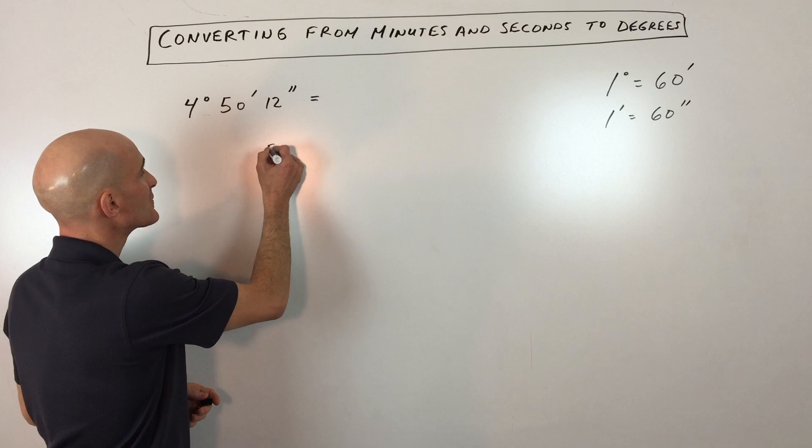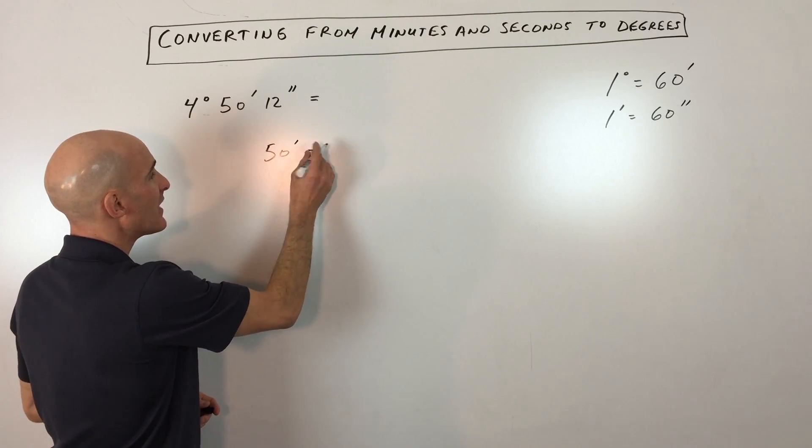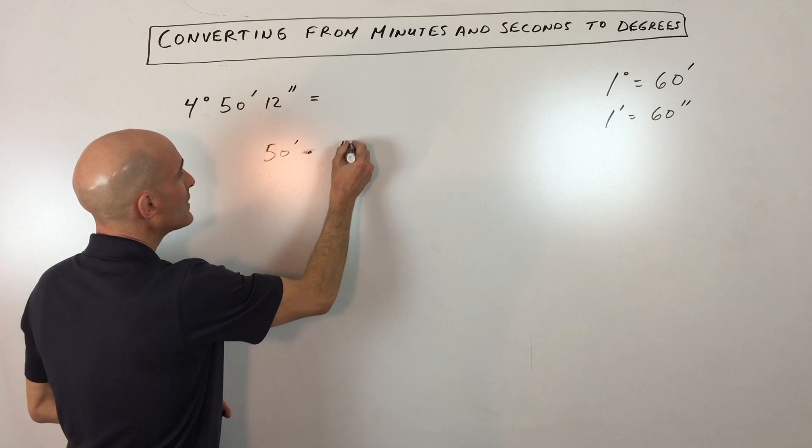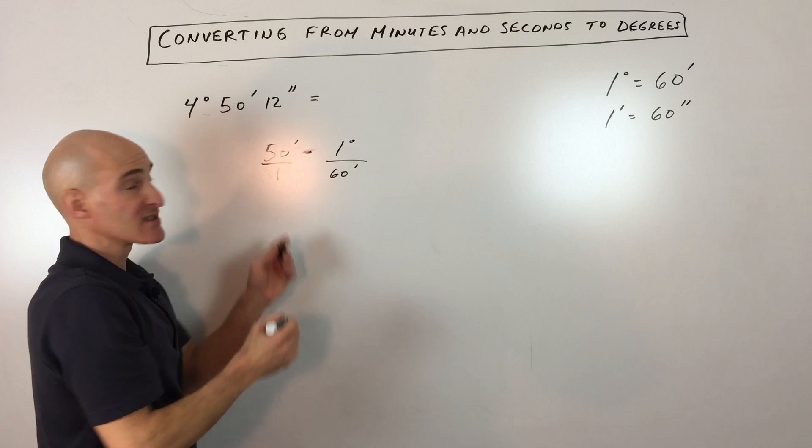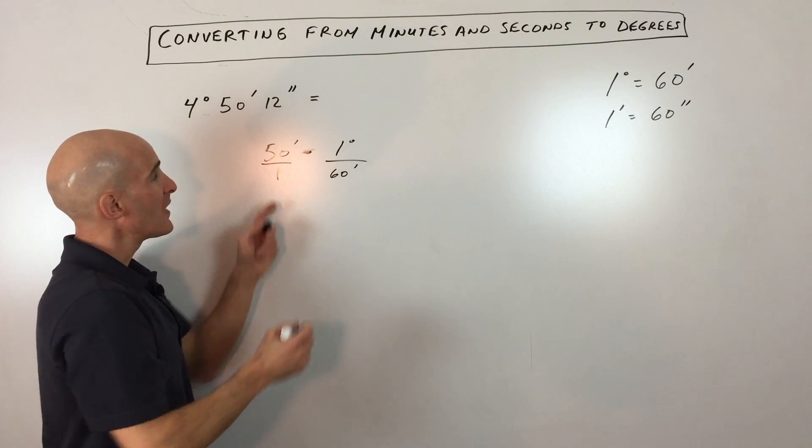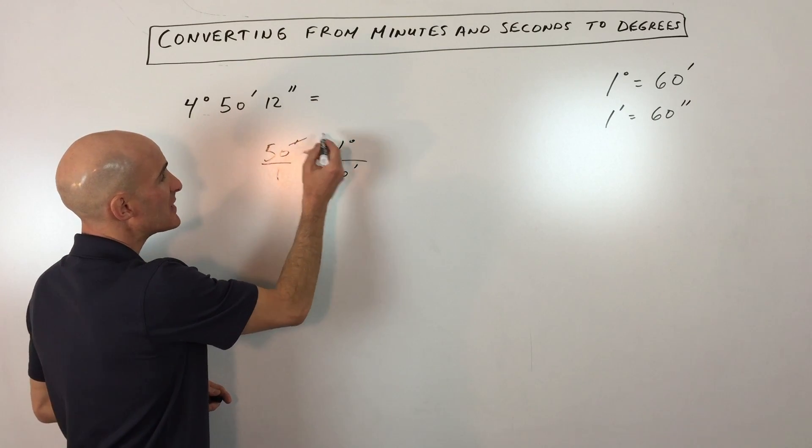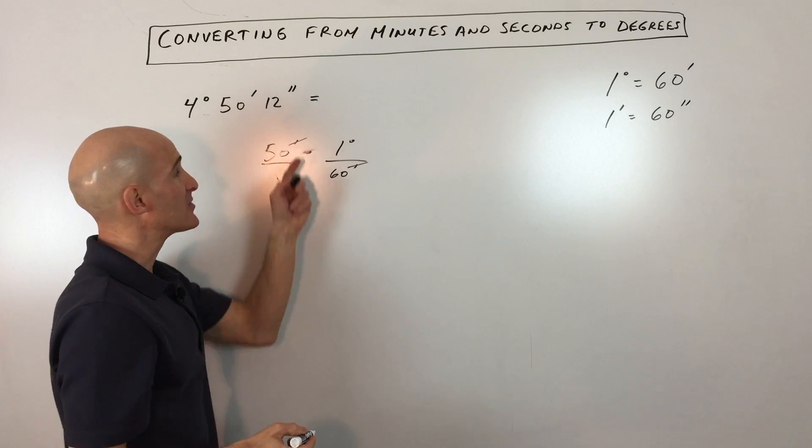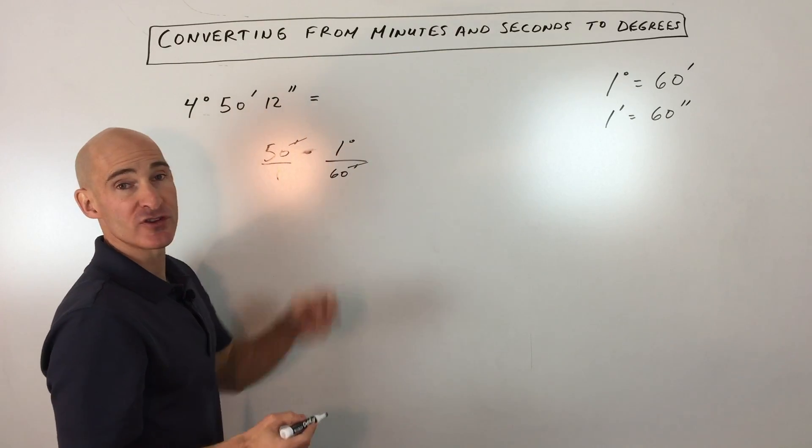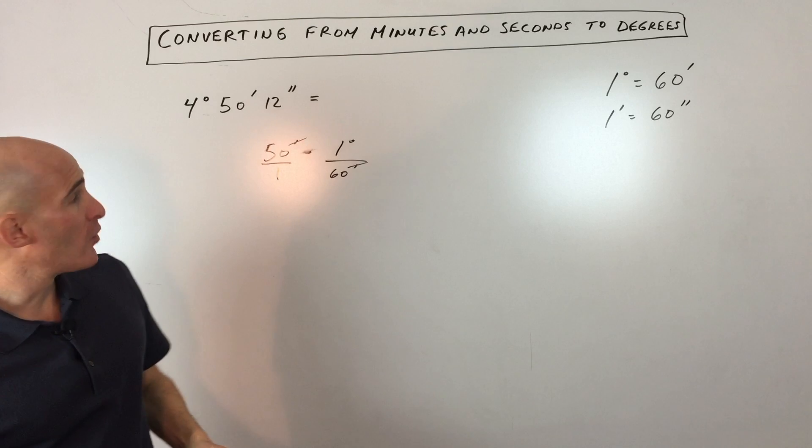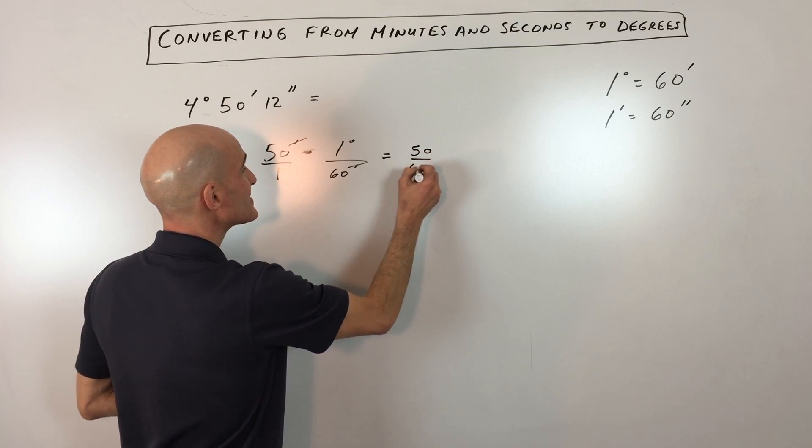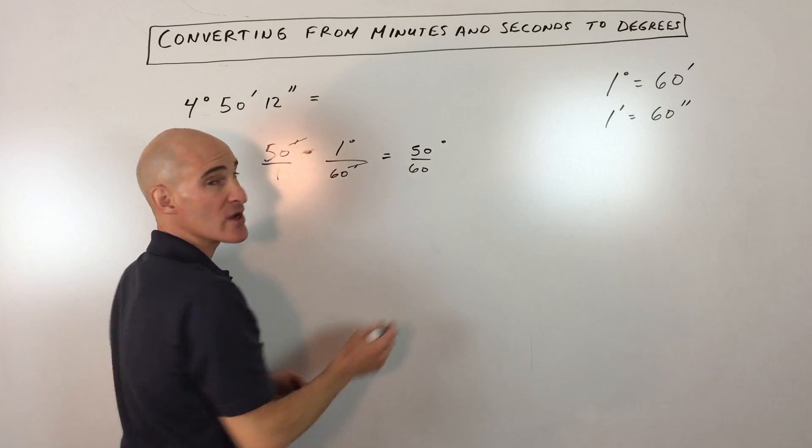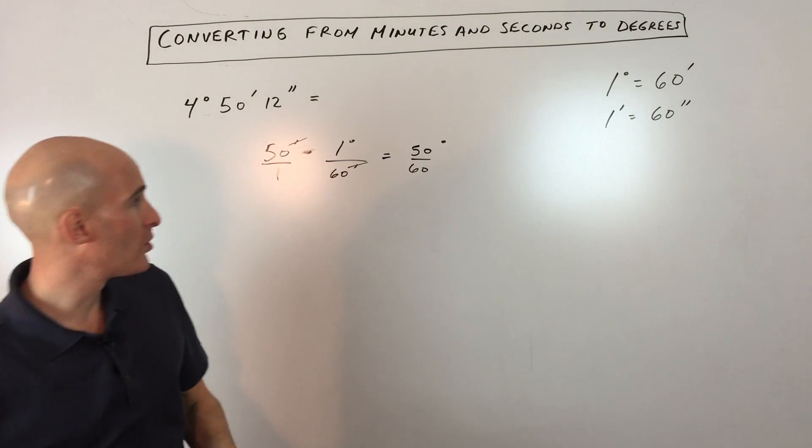Let's take the 50 minutes first. And you can see that for every 1 degree, there are 60 minutes. Anything divided by 1 is itself, so I'm putting 50 over 1. And what you can see happens here is that the minutes units, they cancel each other out. See numerator and denominator? And we're left with the degree units, which is what we want. So if we go ahead and multiply across here, we get this is 50 sixtieths of a degree. And let's go ahead and convert that into a decimal form here.